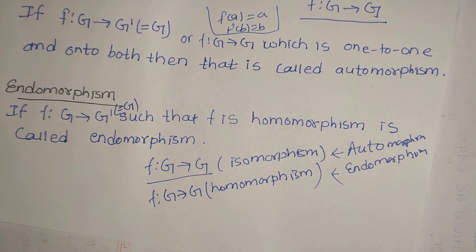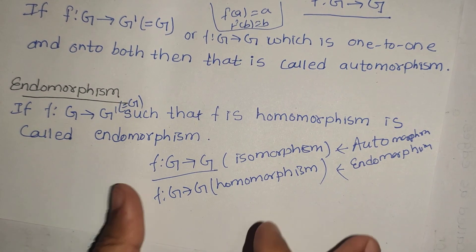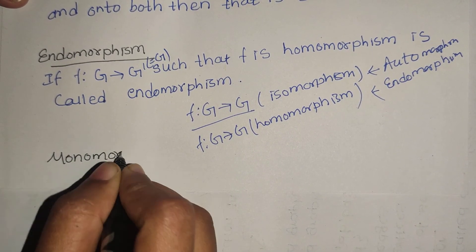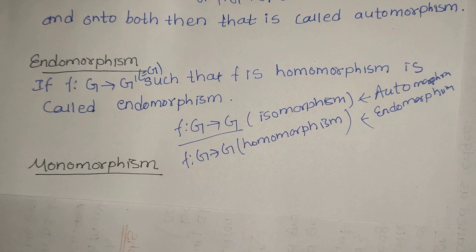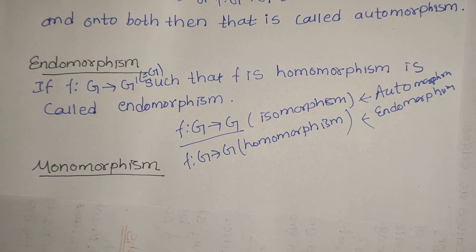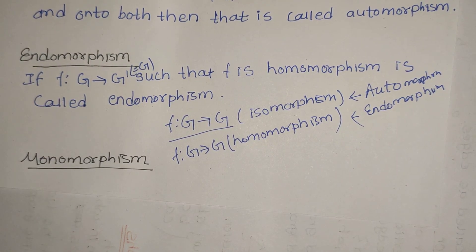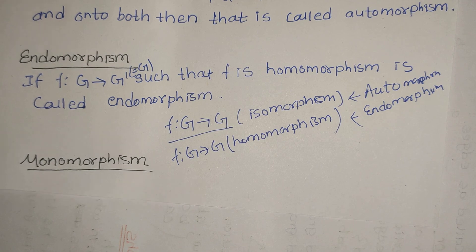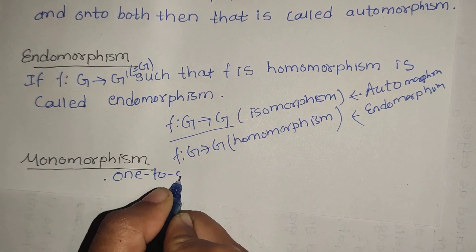To summarize: isomorphism, epimorphism, homomorphism, automorphism, and endomorphism. Endomorphism is homomorphism from G to G. Onto homomorphism is epimorphism. Isomorphism with mapping from G to G is automorphism. Endomorphism means homomorphism with mapping of G to G. Monomorphism means one-to-one homomorphism.